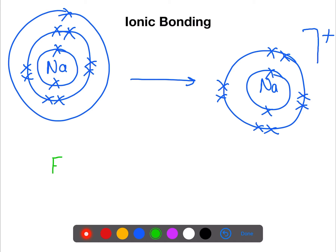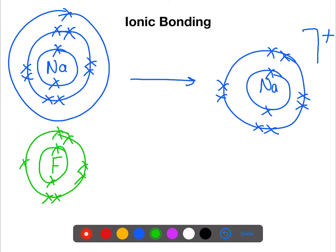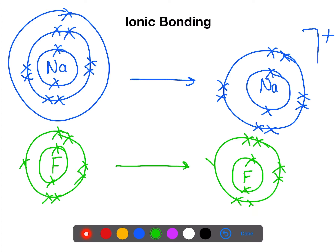Let's now look at a non-metal atom. Fluorine has an electron arrangement of two, seven. To be able to become an ion, it gains an electron. This gives it an electron arrangement of two, eight, which is stable. We've gained an electron, so in the process we've become a negative ion.